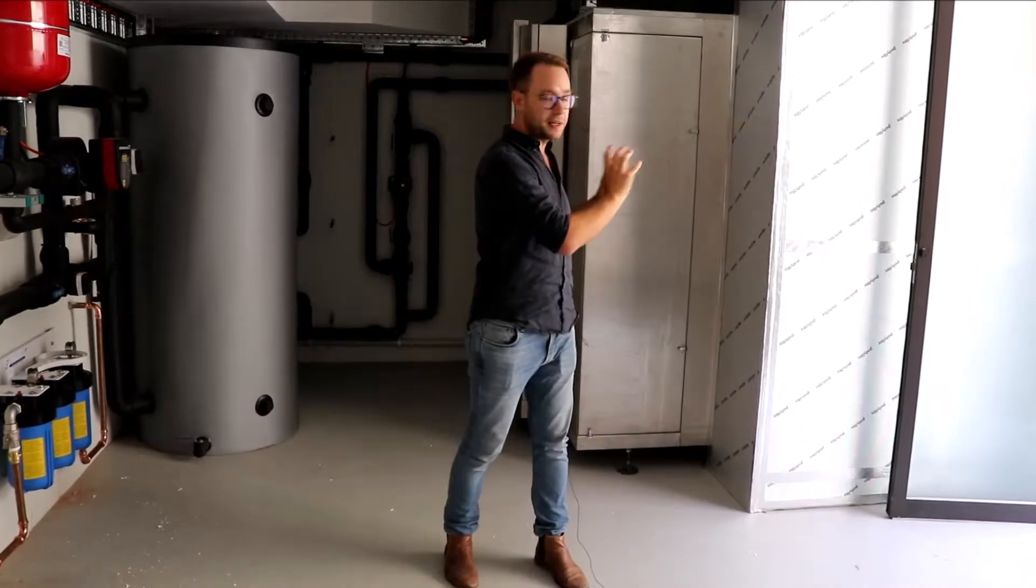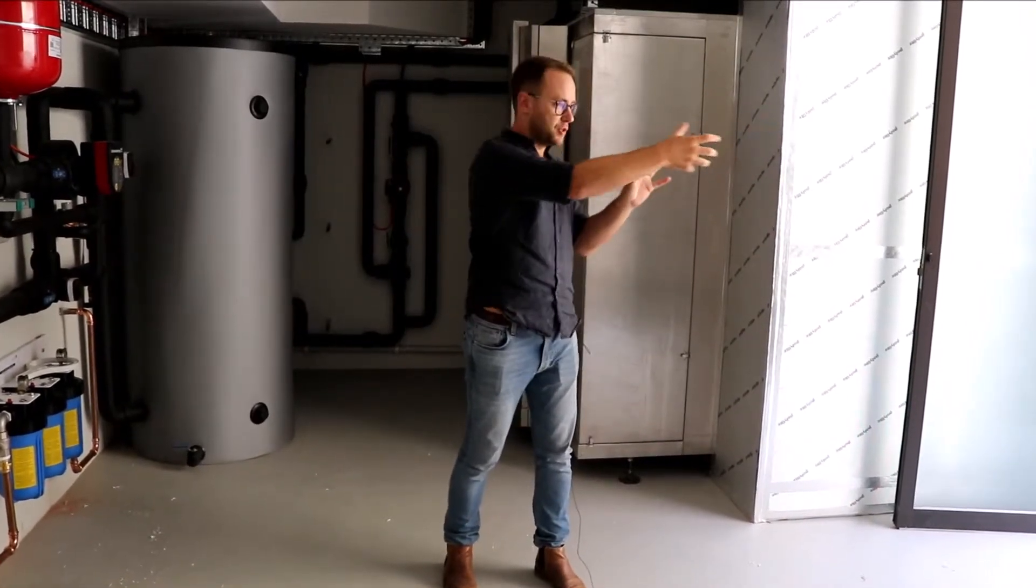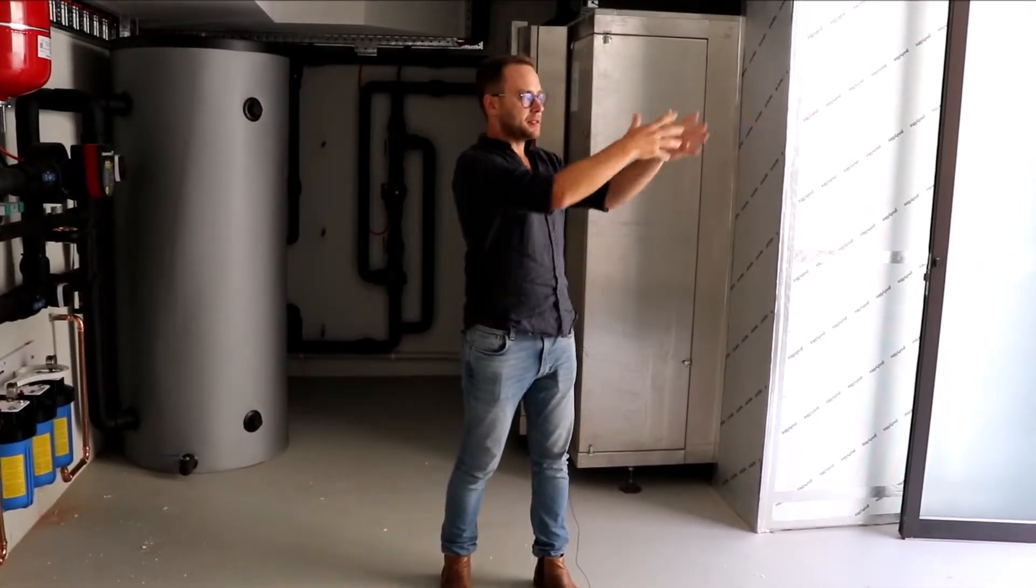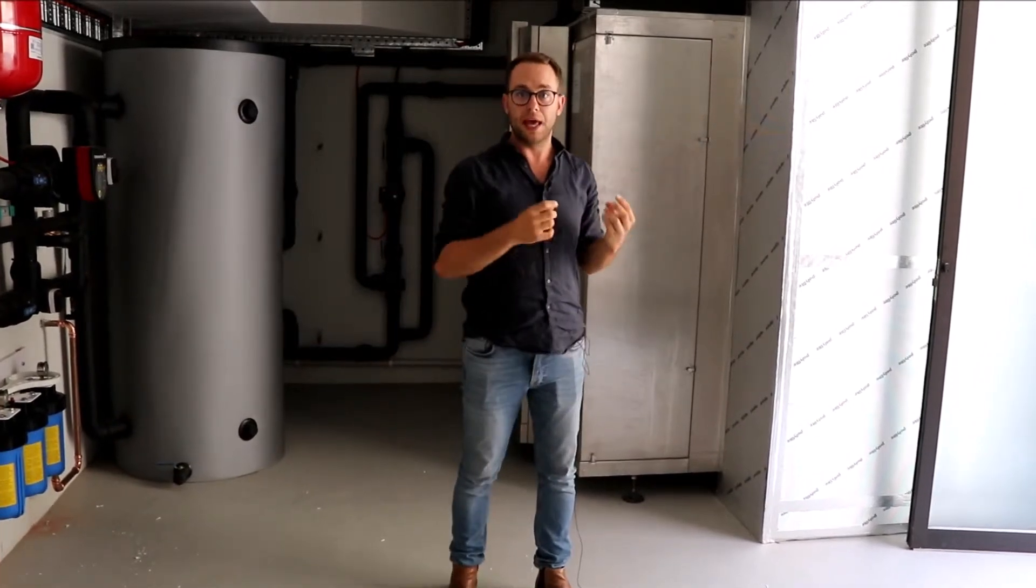And then around the corner on the other side we're actually expelling the exhaust air which we've already withdrawn the energy from that we want to use. So what happens is on one side of the house there's ducting and the heat pump is drawing air through and that means it's just pulling the air from outside.